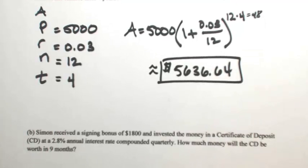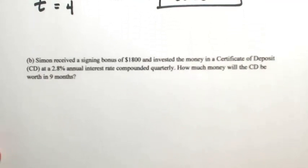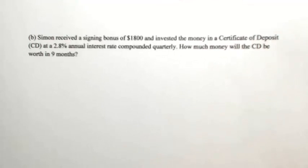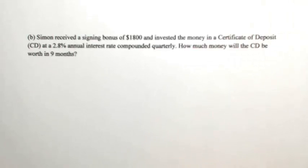Let's look at another one, the number is a little more complicated. So let's say that Simon received a signing bonus of $1,800 and invested the money in a certificate of deposit, known as a CD, at a 2.8% annual interest rate, compounded quarterly. So how much money will the CD be worth in nine months?